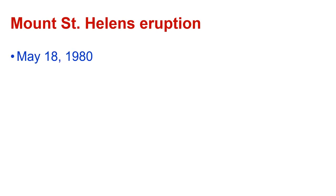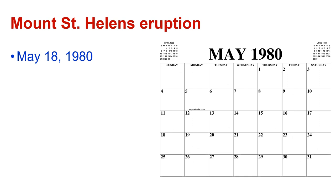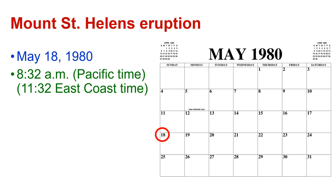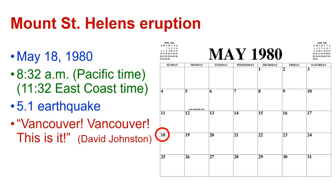Mount St. Helens eruption. It began on May 18, 1980 — it was indeed a Sunday. At 8:32 a.m. Pacific time, which was 11:32 east coast time, there was a 5.1 earthquake. And this is when David Johnston grabbed his microphone and yelled, 'Vancouver, Vancouver, this is it.'